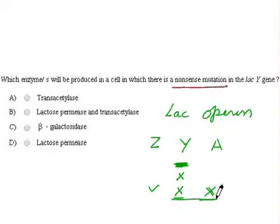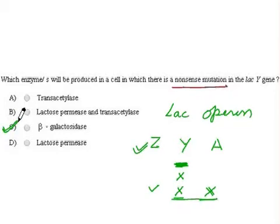So the enzyme synthesized by gene Z — beta-galactosidase — will be produced. Therefore, option C, beta-galactosidase, is our correct answer.